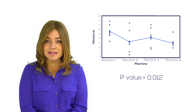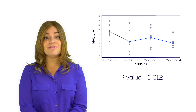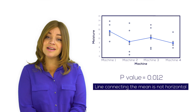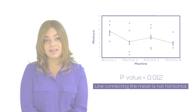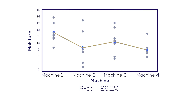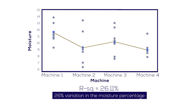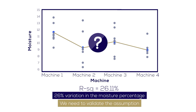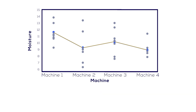This difference in the means can also be seen in the individual value plot, as the line connecting the means is not horizontal. The R-squared shows that the influence factor machine explains 26% of the variation in the moisture percentage. However, before we can completely trust these conclusions, we have to validate the assumptions underlying the ANOVA. These checks are called the residual analysis and this is the final step of your ANOVA.